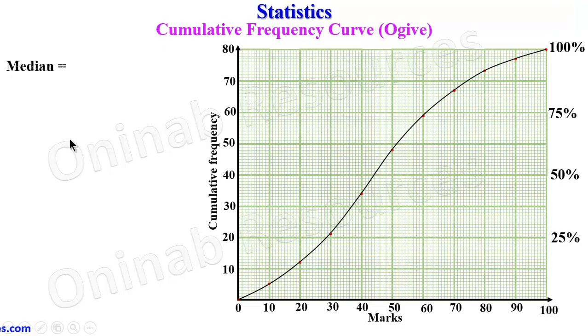To calculate the median, which is also known as Q2, is 50th percentile. We go to the percentile axis, get the line of 50, trace it to the curve, and trace it down to the marks. From here, we have 40, 41, 42, 43, 44. So the median is 44.